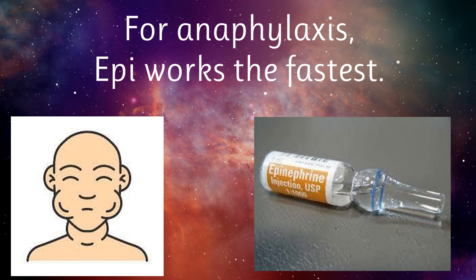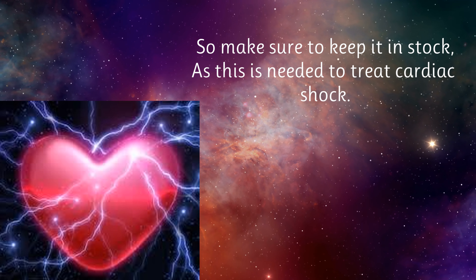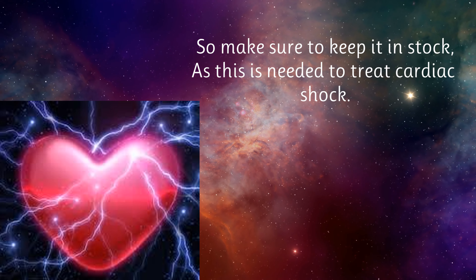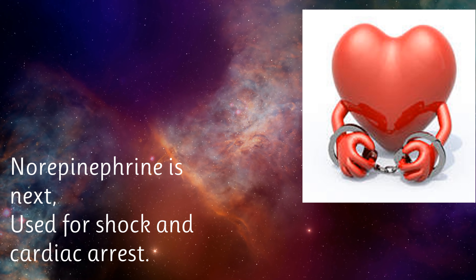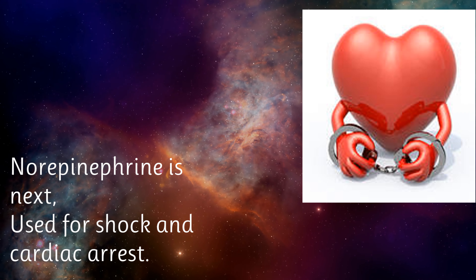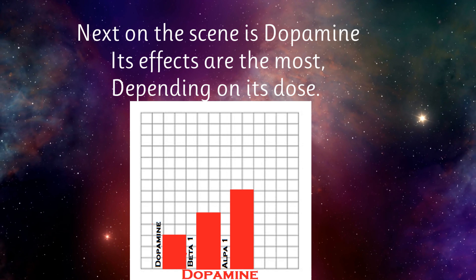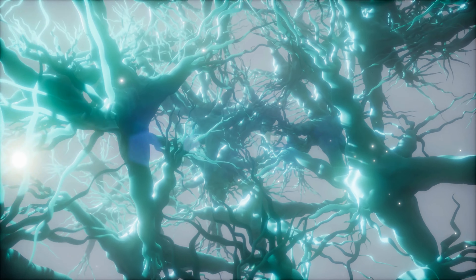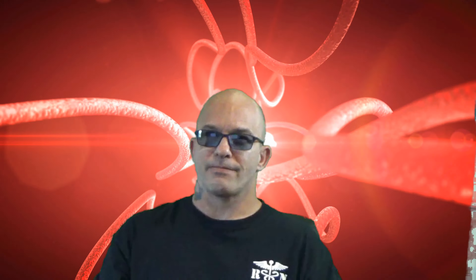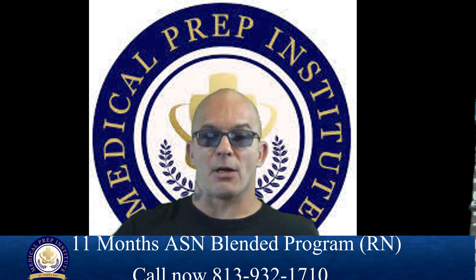For anaphylaxis, epinephrine works the fastest — make sure to keep it in stock, as it is needed to treat cardiac shock. Norepinephrine is next, used for shock and cardiac arrest. Next on the scene is dopamine, whose effects are most dependent on the given dose. Your continued support is greatly appreciated. Please continue to like, subscribe, and share to help enable the production of future educational content. Special thanks to Medical Prep Institute of Tampa for sponsoring these videos.